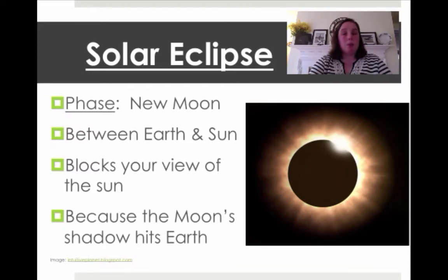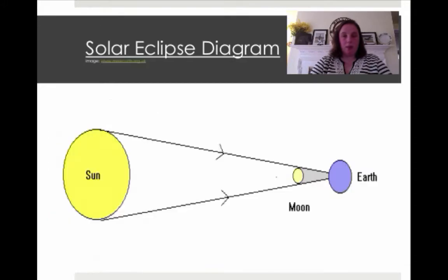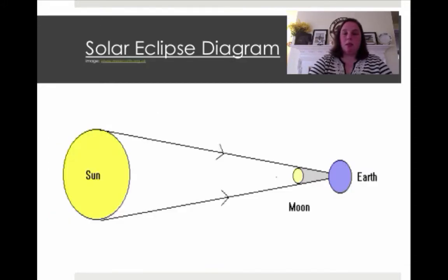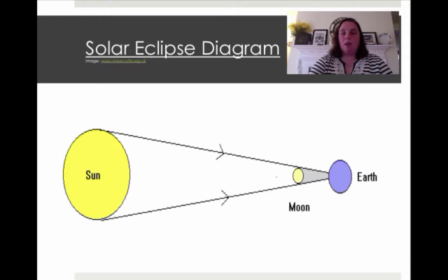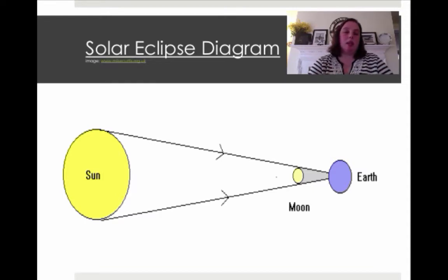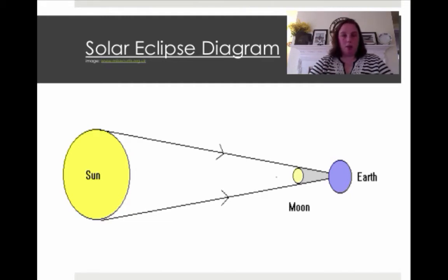The moon is much, much smaller than the sun. Looking at this diagram, notice that the difference between a solar and lunar eclipse has to do with where the Earth and the moon are — they've swapped positions. You now have the sun, the moon, and the Earth in that order. Because the moon is much smaller, the shadow it casts is only going to affect a small portion of the Earth.